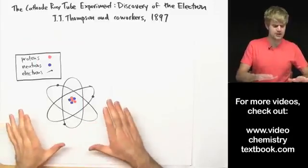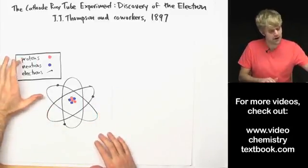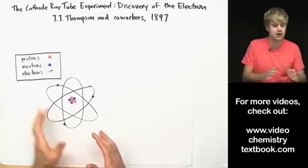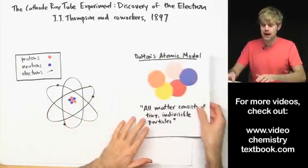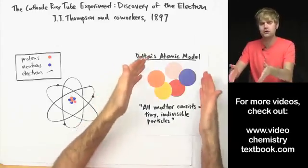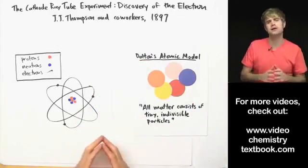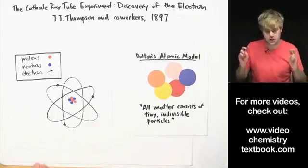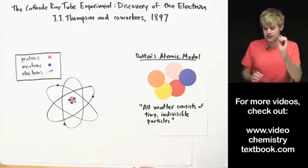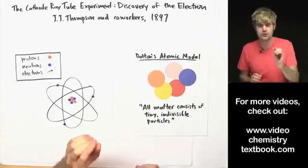These days we think about atoms as being made up of a variety of smaller subatomic particles. But in the late 1800s it was all about John Dalton's model of the atom. In the early 1800s John Dalton had proposed that all matter, all stuff, was made up of tiny indivisible particles called atoms.